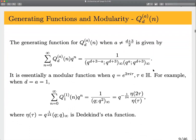Let's think about the modularity properties of these generating functions. If we look at the capital Q function, the generating function always has a nice form — one over these infinite q-Pochhammer symbols — and that's always going to be essentially a modular function. In the nicest example, when d and a are both one, we have this eta quotient: Q^{-1/24} times eta(2τ)/eta(τ), which is a weight-zero modular form.